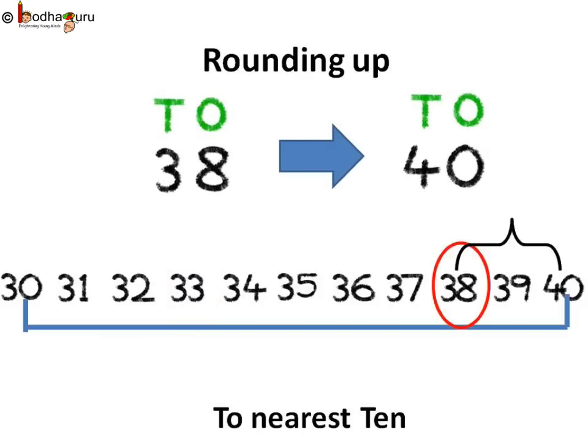When the digit at 1's place is 5 or more, we round up. Meaning, 10's digit is increased by 1 and the 1's digit becomes 0.